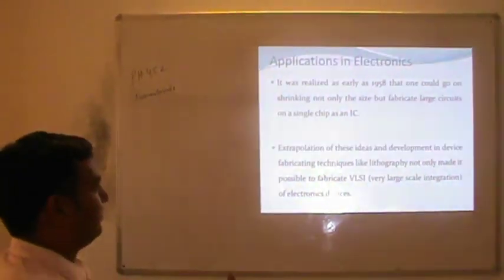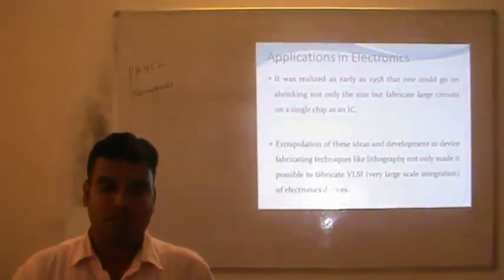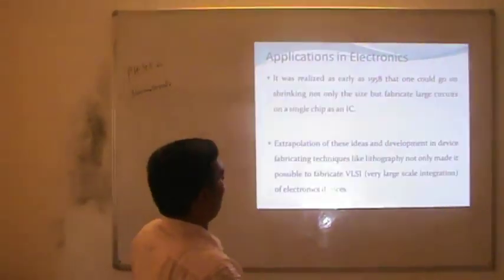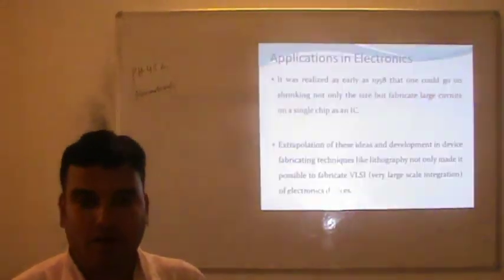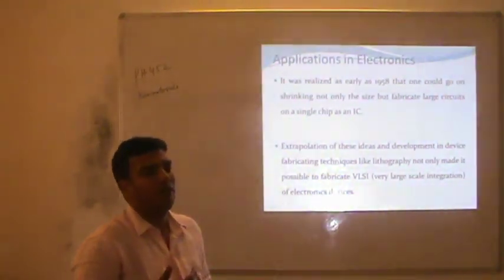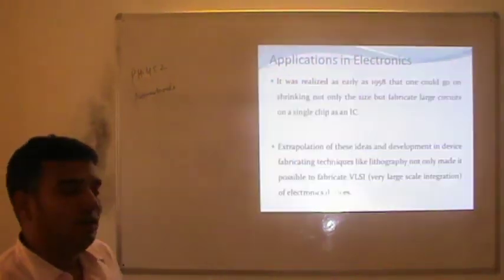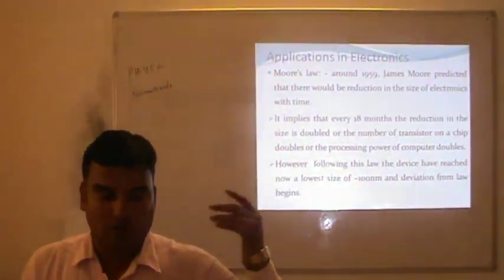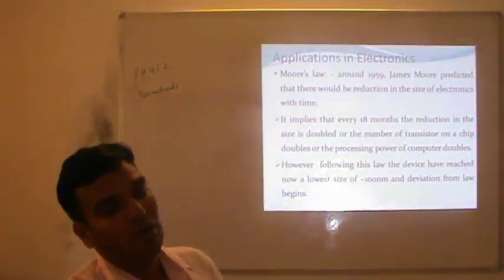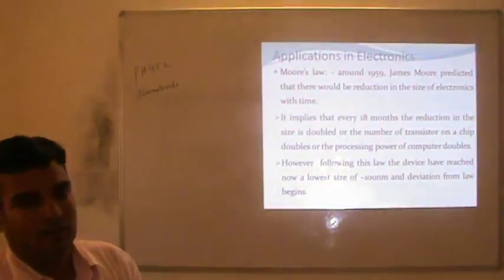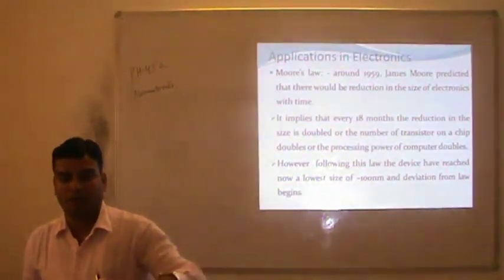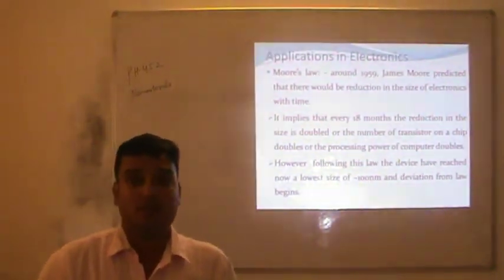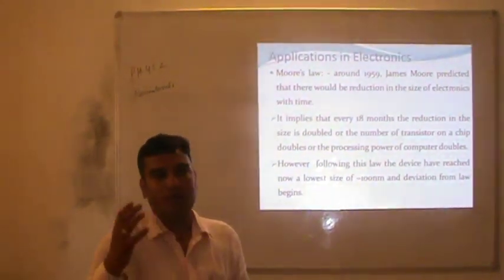This was again a revolutionary thing about electronics. From 1958 onwards, most electronic circuits are fabricated on silicon chips. Extrapolation of this development made it possible to fabricate very large-scale integration of electronic devices. By using the IC technique, it became capable to fabricate large-scale devices on the same chip. Gordon Moore predicted around 1959 that there could be a reduction in the size of electronics with time — quite a surprising prediction — and his theory was well applicable until 2000. After 2000, there are some deviations in Moore's Law.